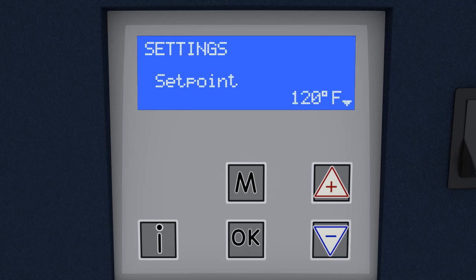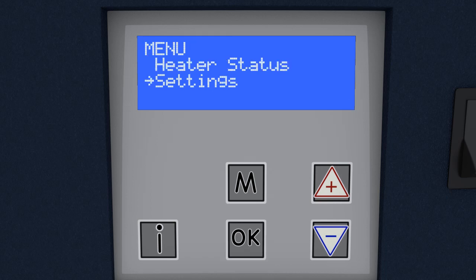The first screen displays set point temperature. To change the set point, press OK. The temperature will start blinking. Use the up arrow or down arrow to change the set point. Press OK to save the new setting.